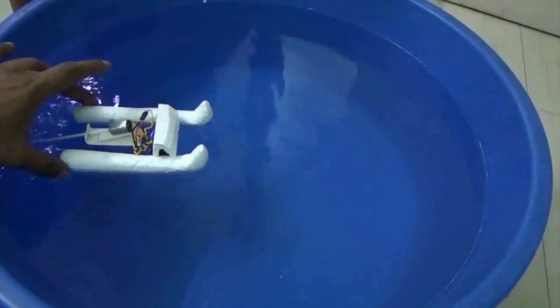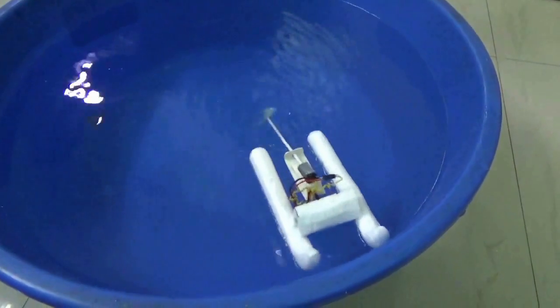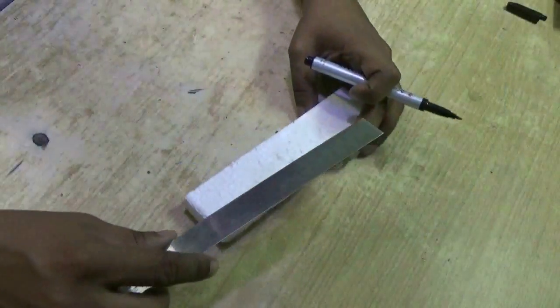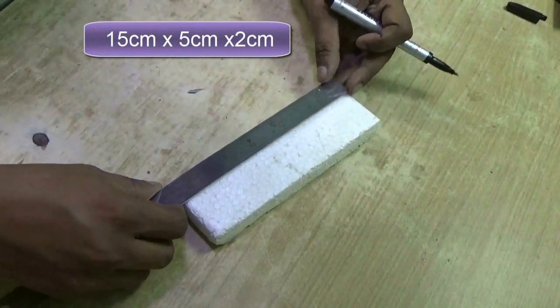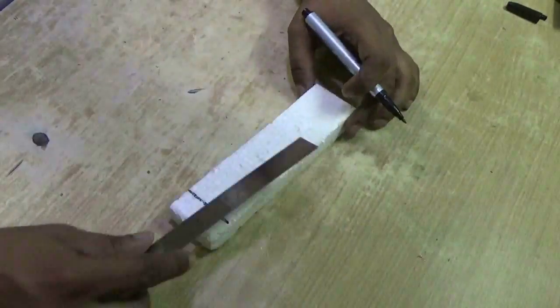Hi guys, we'll design this simple motor boat which you can really enjoy. For this you need a 15 centimeter by 5 centimeter by 2 centimeter thick thermocol piece.